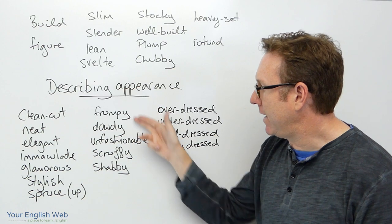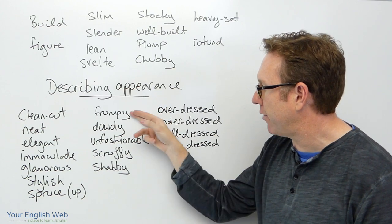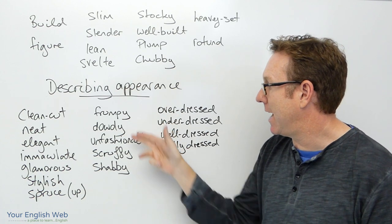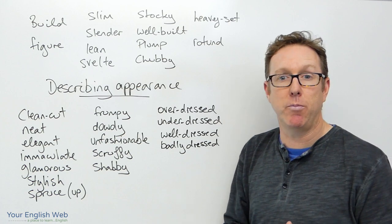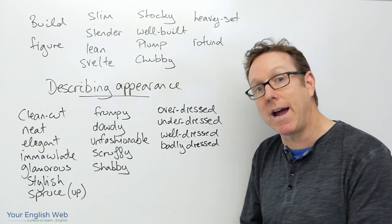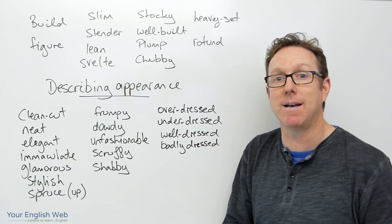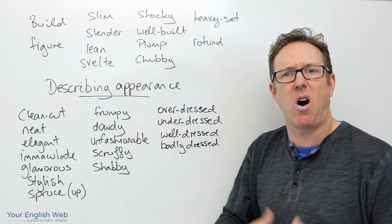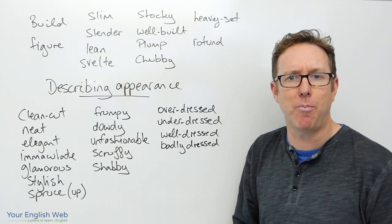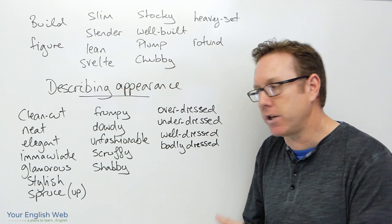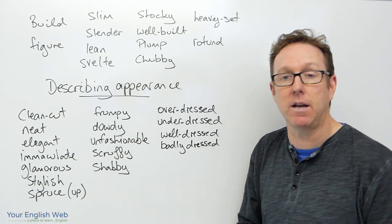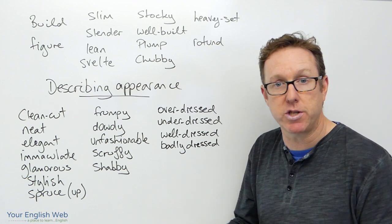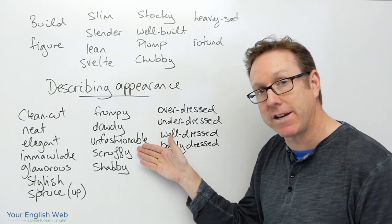Frumpy, dowdy, and unfashionable are fairly similar. To give you an idea, the movie Bridget Jones's Diary — Bridget Jones would be somebody we could describe as frumpy: old-fashioned clothes that are not particularly stylish, maybe an old-fashioned hairstyle. Frumpy, dowdy, and unfashionable all describe this kind of look.